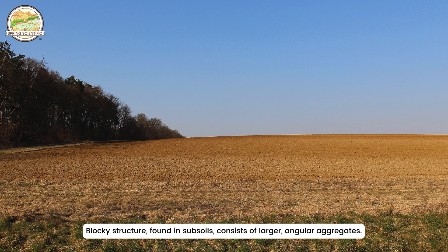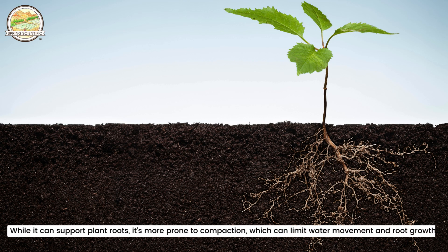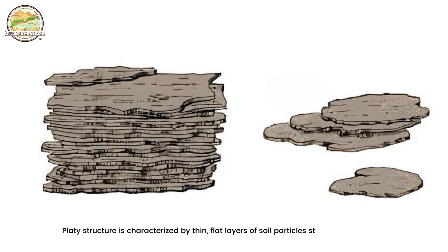Blocky structure, found in subsoils, consists of larger angular aggregates. While it can support plant roots, it's more prone to compaction, which can limit water movement and root growth.